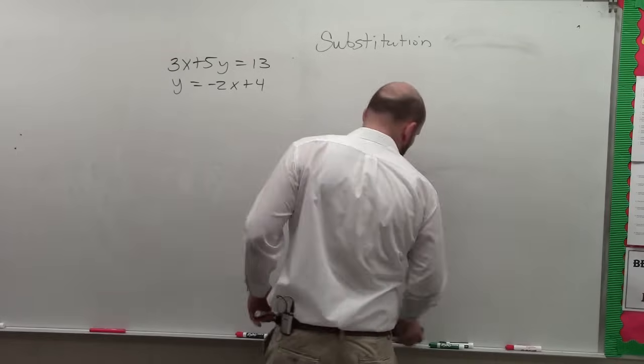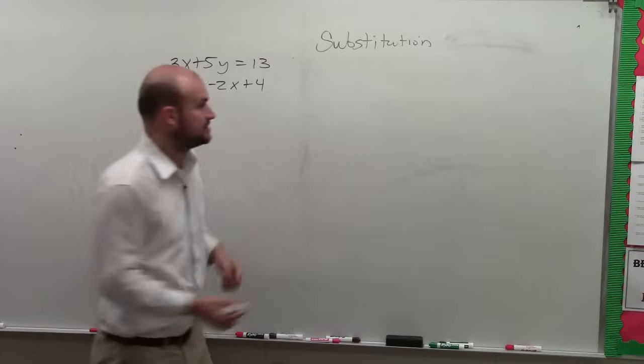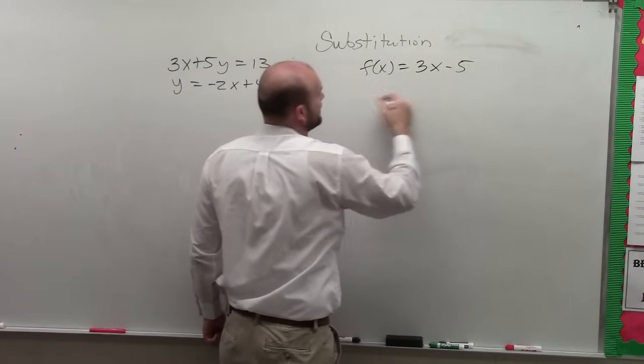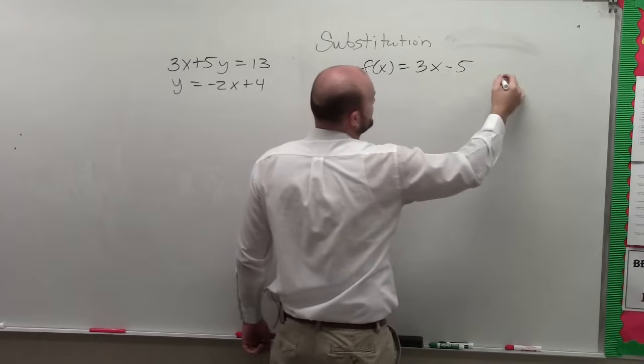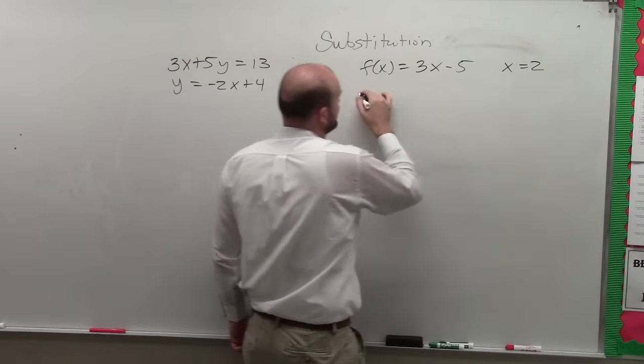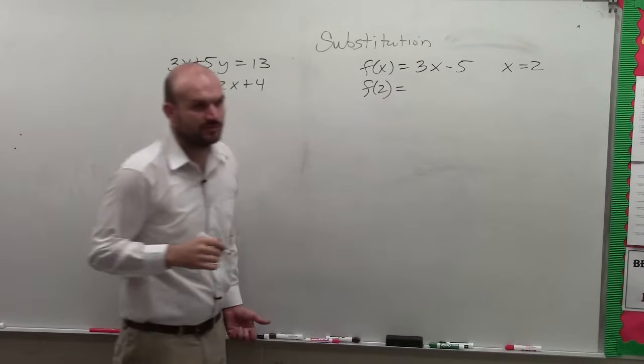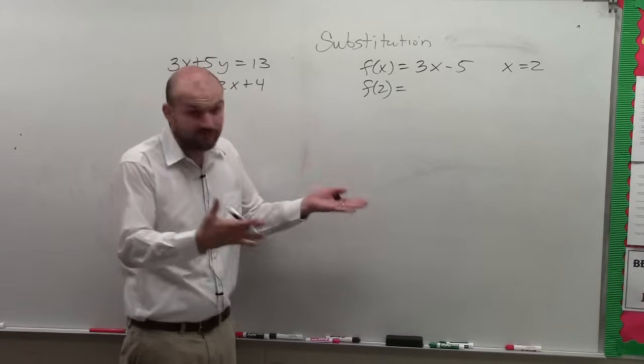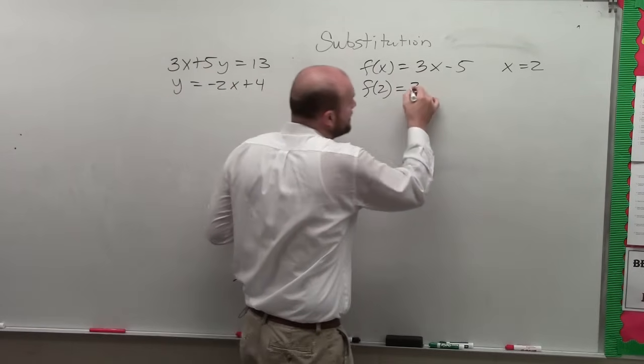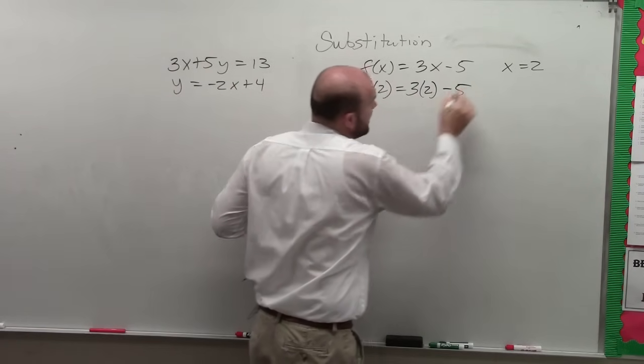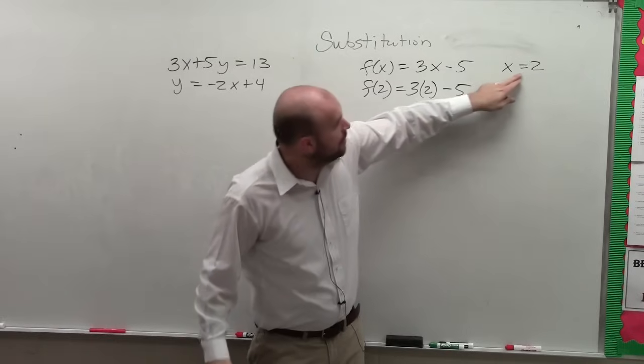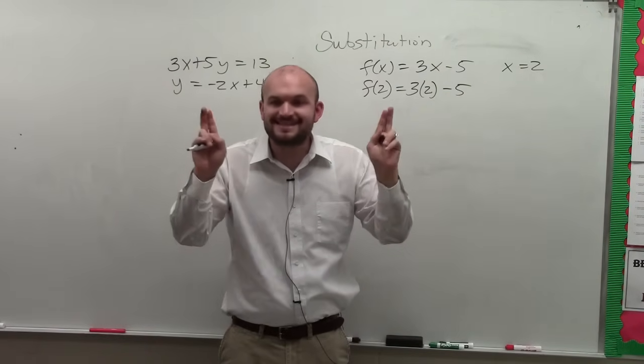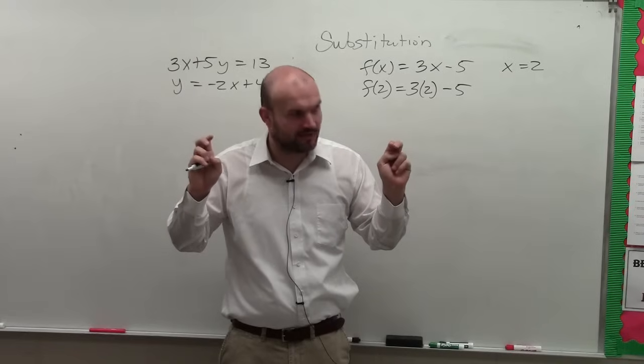So now, if you guys remember when we did functions, if I had f of x equals 3x minus 5, and I say find when x equals 2, or I said, they would say f of 2. Now, what else did we do with the 2? You put it in for the x, right? So you did 3 times 2 minus 5 because x was equal to 2. 2 was equal to x. You could replace them or substitute one for the other. Correct?